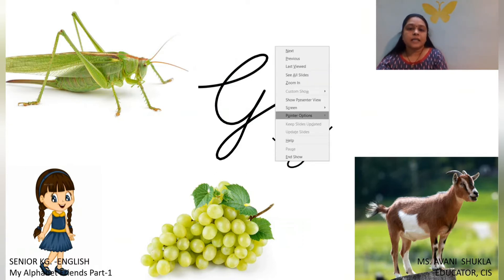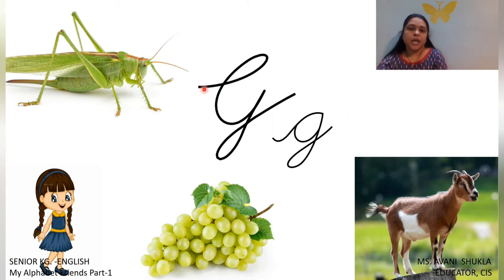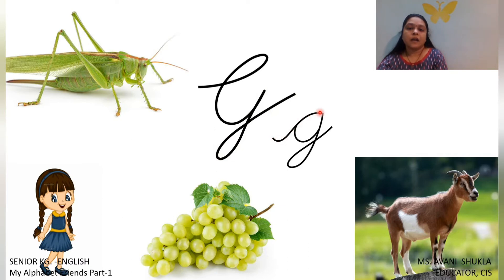So children, this is Capital Cursive G. We have to start from the till. So make a till, make C, come down and then till. This is G says G.